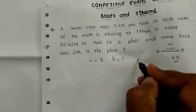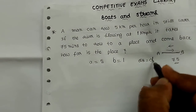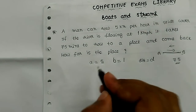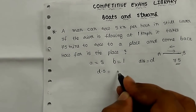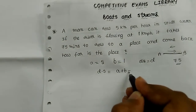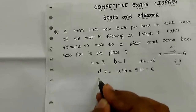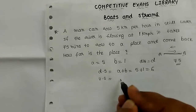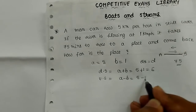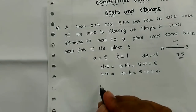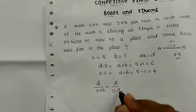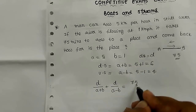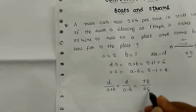Downstream speed is a plus b. So downstream speed is plus: a plus b is 5 plus 1 equals 6. The upstream cost is a minus b: 5 minus 1. We have come to get the distance, and on this time the cost is a minus b.